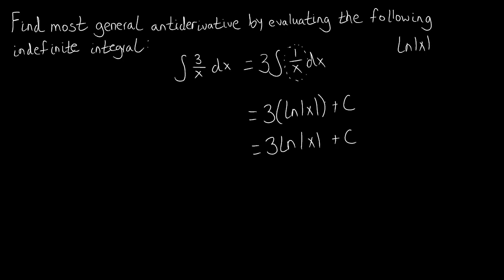You may be wondering why I didn't incorporate the plus C into that multiplication. The reason goes back to the fact that when we distribute 3 to natural log of x and to plus C, we get 3·ln(x) — that doesn't change — but if we multiply a constant by 3, we're still going to get another constant. So any operation you do to it — multiplication, division, addition, subtraction — anything you do to this arbitrary C is still going to make it a plus C. It's not going to change the fact that it's still plus an arbitrary constant, because 3 times an arbitrary constant is still an arbitrary constant.